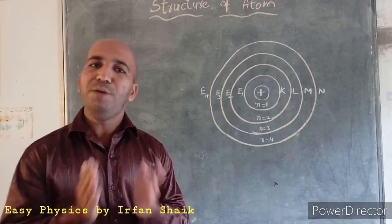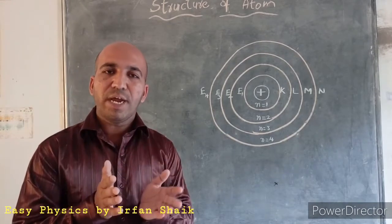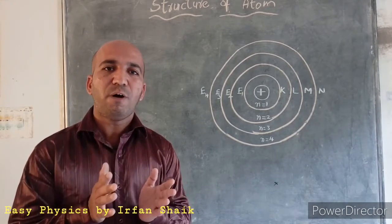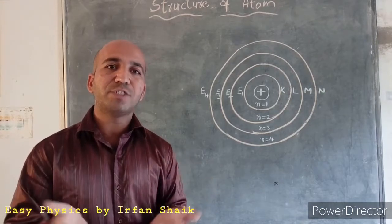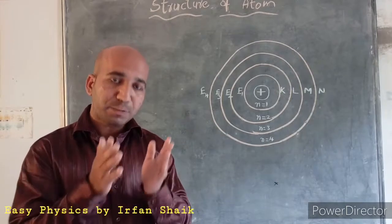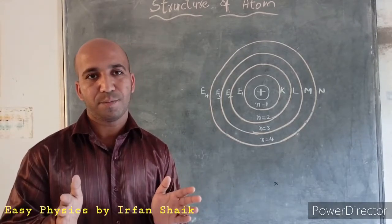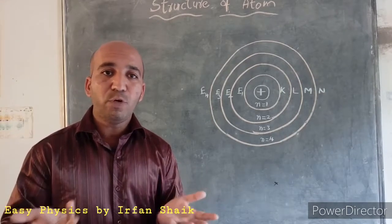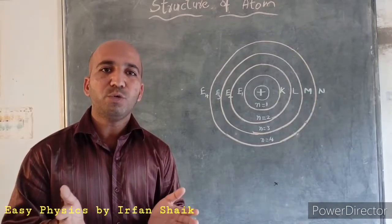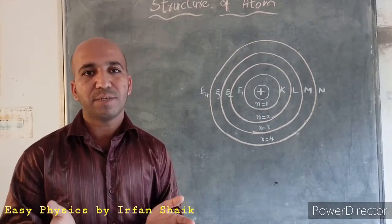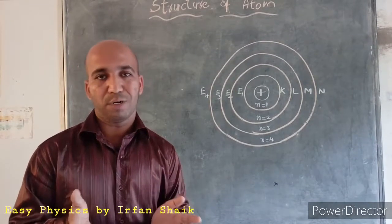Another defect identified in Bohr's model is that when the spectrum of the hydrogen atom is observed in a high-resolution spectroscope, the spectral lines split into many more lines. Bohr was unable to explain why the spectral lines of hydrogen split into so many additional spectral lines. These are the main defects of Bohr's atomic model.